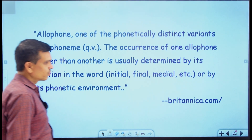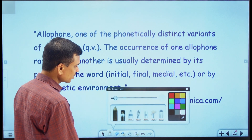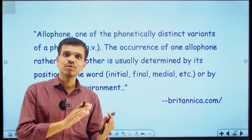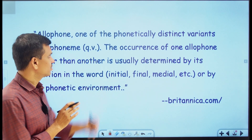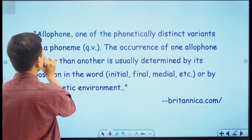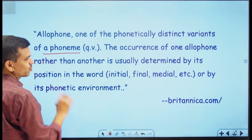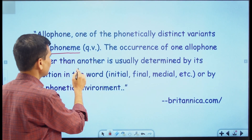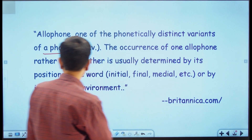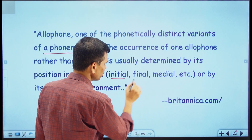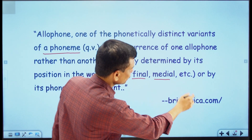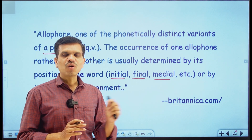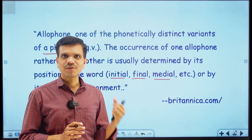Now let's talk about allophones. I have taken this definition from Britannica.com. What are allophones? Allophones consist of a phoneme — there is a phoneme and this phoneme can have different types of allophones. The definition states: an allophone is one of the phonetically distinct variants of a phoneme. It is a variant of a phoneme, so the same phoneme can have different allophones. The occurrence of one allophone rather than another is usually determined by its position in the word — at initial, final, or medial position — or by its phonetic environment.